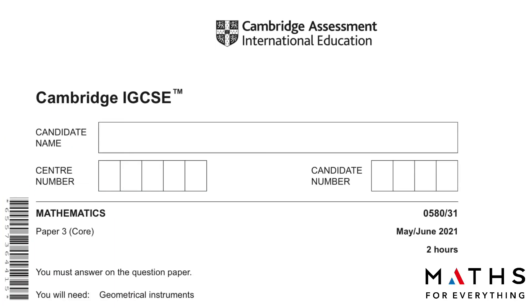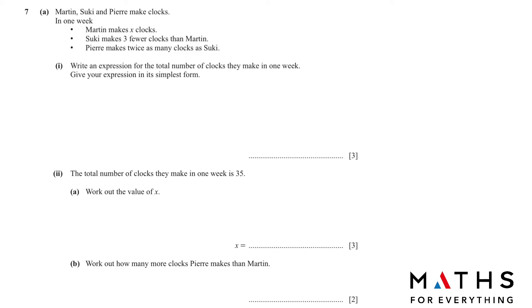Assalamu alaikum. Welcome to my channel. Today we are going to solve Cambridge IGCSE Mathematics Paper 3, Variant 3.1, May June 2021, question number 7 onwards. Before we start, do subscribe to my channel, share with your friends, and if I have helped you, do mention in the comments section. Let's start.